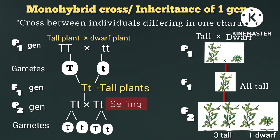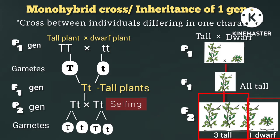The F1 plant produces one capital T gamete and one small t gamete. From this, we get the F2 generation. In the F2 generation, one-fourth of the plants are dwarf (25%), and three-fourths are tall (75%).